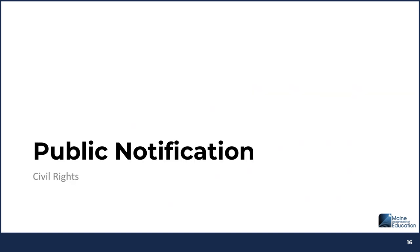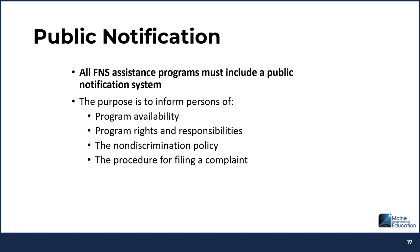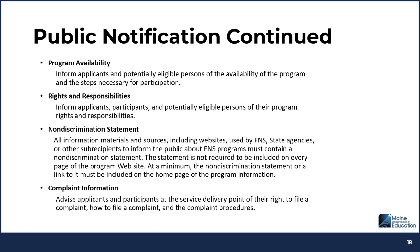The next topic is public notification. All FNS assistance programs must include a public notification system. The purpose of this is to inform persons of program availability, program rights and responsibilities, the nondiscrimination policy, and the procedure for filing a complaint. Program availability informs applicants and potentially eligible persons of the availability of the program and the steps necessary for participation. Rights and responsibilities informs applicants, participants, and potentially eligible persons of their program rights and responsibilities.